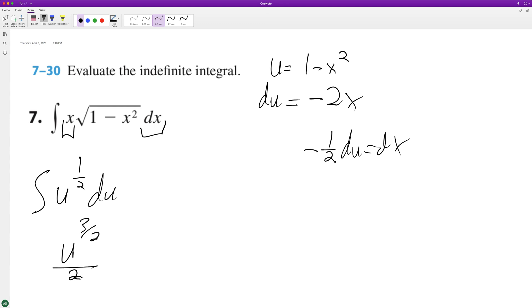Substitute back in. This becomes two-thirds, multiplying by the reciprocal of the denominator, and then this is just 1 minus x squared raised to the three-halves plus c, and that's it.